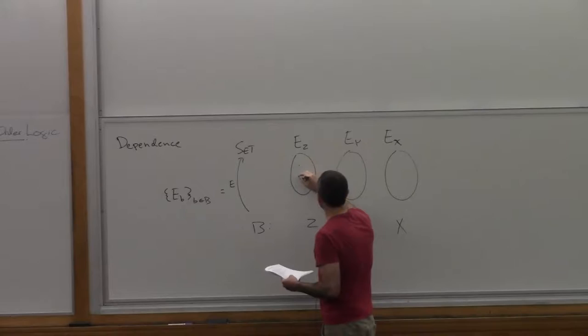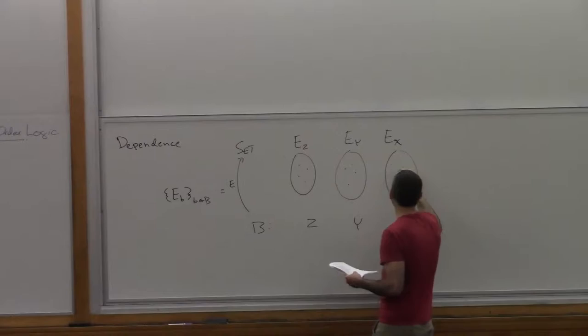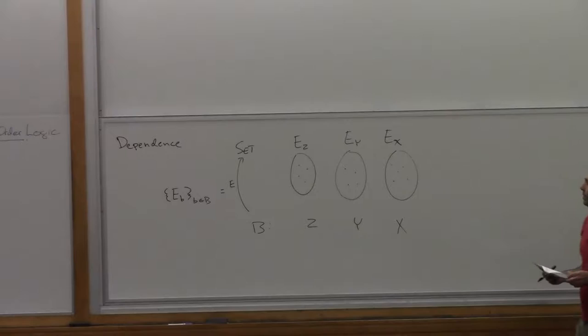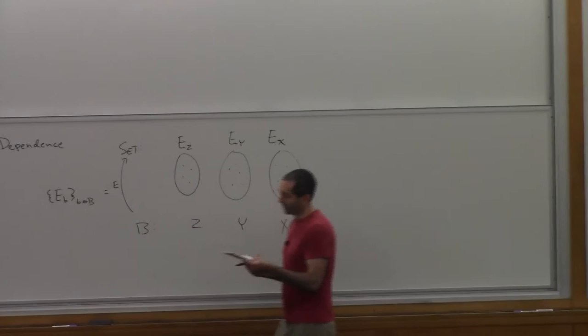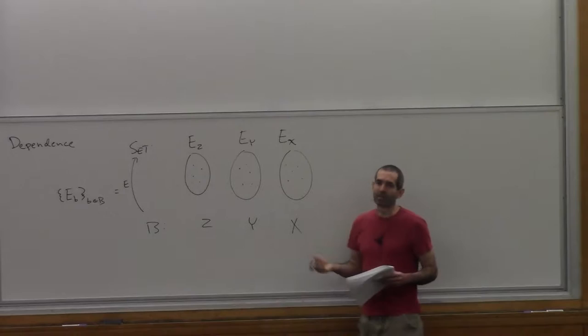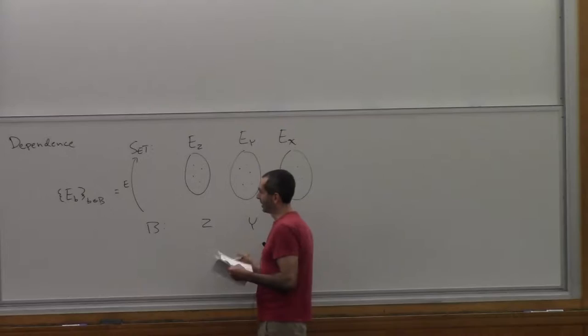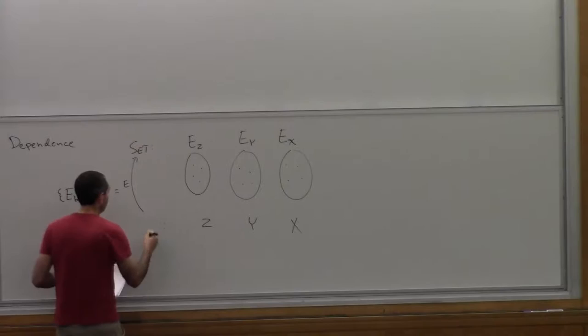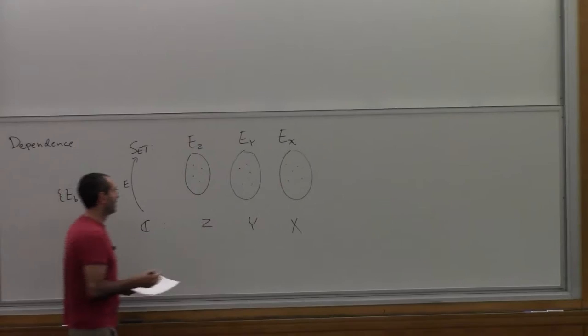Each one of these things is discrete because it's a set — it has some points, but no other structure, no morphisms. So we can think about how we can generalize this construction. The obvious first way is that there's no reason that this category B needs to be discrete. It doesn't have to be a set. It can be a category with objects and arrows. So we can change this discrete category B into an ordinary category C.